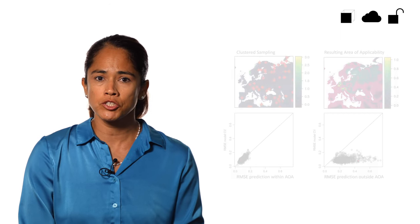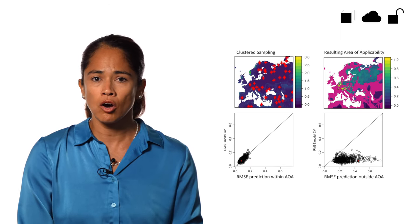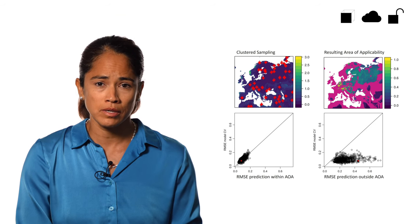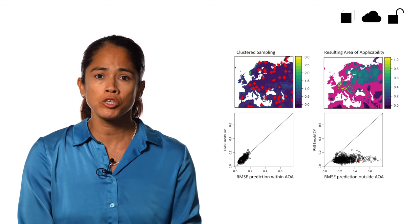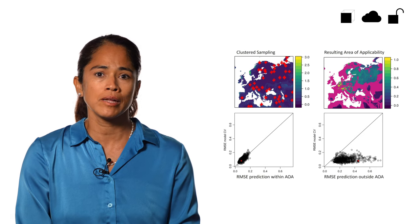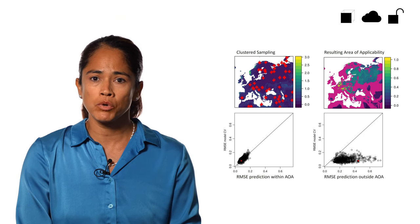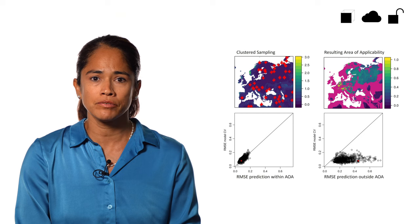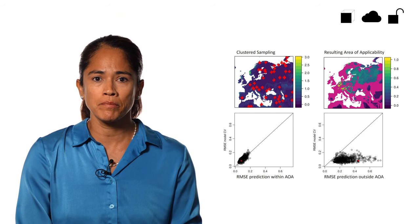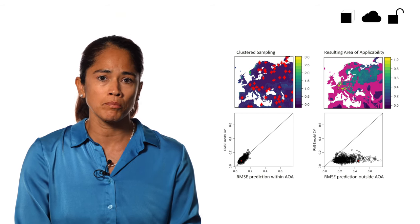Extrapolating predictions far from the reference data often causes models to produce inaccurate results. Therefore, predictions should be restricted to the model's applicable area, graying out regions where predictor values significantly differ from the training data to prevent misleading conclusions and error propagation.